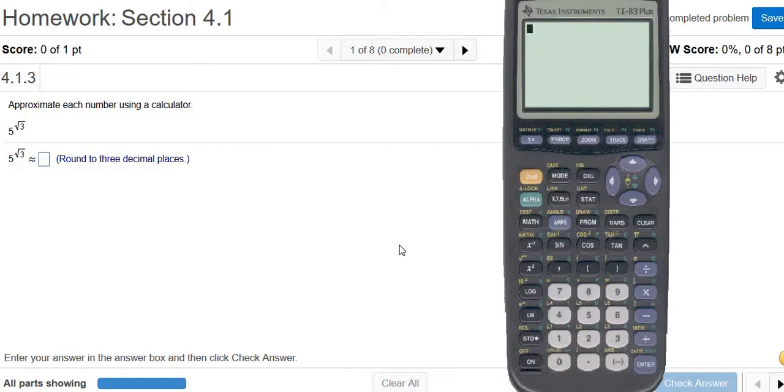Approximate each number using a calculator. So we have to approximate 5 to the square root of 3. So first I'll hit 5. And then to get the exponent, you have to hit the exponent key. It's right here. It's this little key here. It's called a caret key. So I'm going to left-click that.